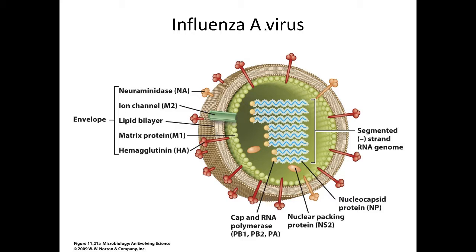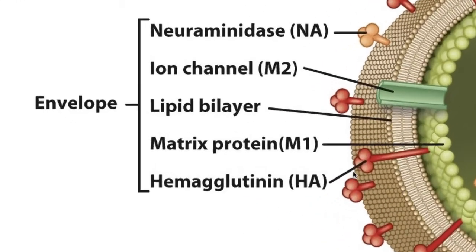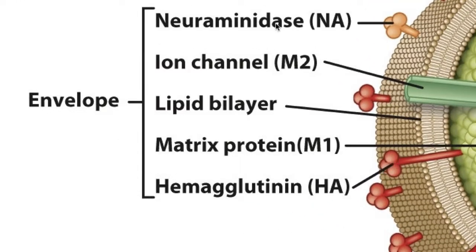There is always a potential that this virus can mutate and then begin a worldwide pandemic. The influenza A virus is an envelope virus, as you can see here. The envelope comes from the host membrane of cells it buds out of. It will have two major proteins on its surface: hemagglutinin (HA) and neuraminidase (NA). These two can indicate by serological identification the type of virus, and that's what's used in identification.